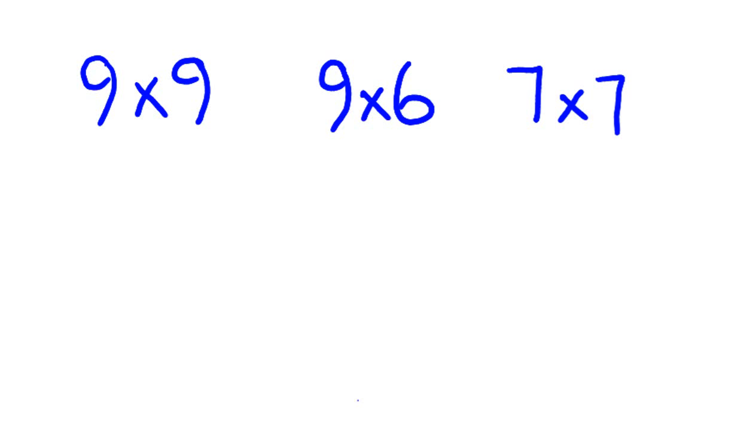Give these a quick go and we'll see how you do. I'm going to answer these right now, but you can pause the video. First off, this is 1 under 10, this is 1 under 10. So 9 take away 1 is 8, 1 times 1 is 1, giving us 81. The next one, 9 times 6: this 9 is 1 under 10, 6 is 4 under 10. 9 take away 4 is 5, the same way 6 take away 1 is 5. 1 times 4 is 4, so 54.